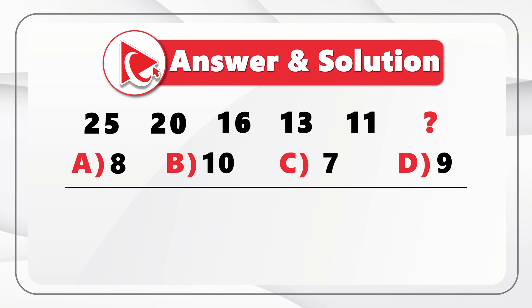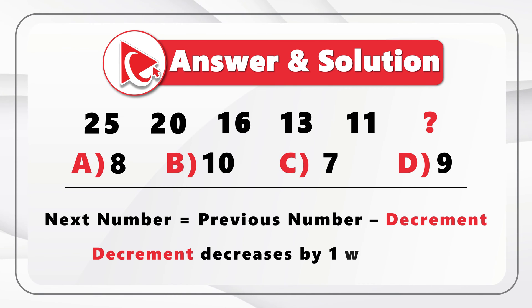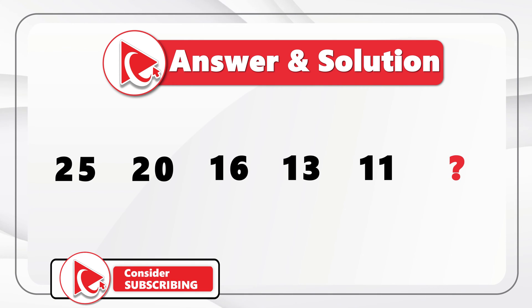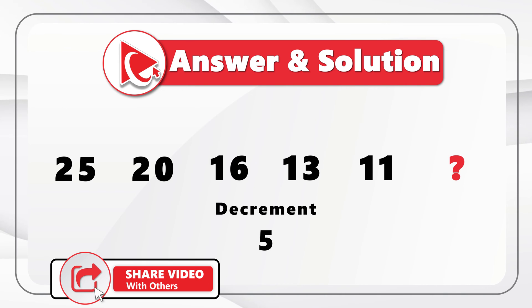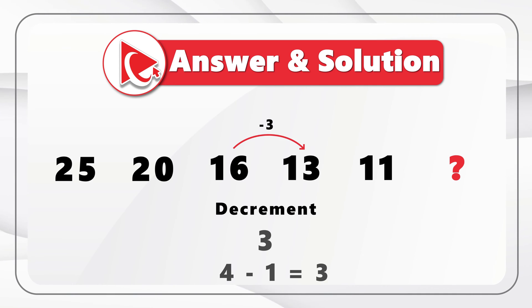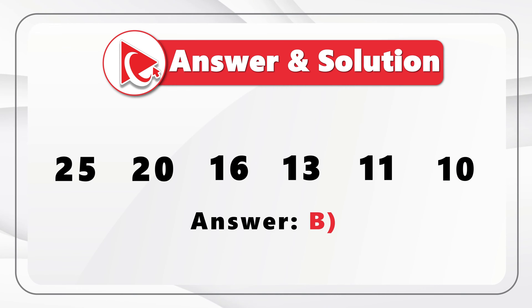Here we have a concept of decrement, and the pattern is that the next number is calculated as the previous number minus a decrement, and the decrement increases by one with each number in the sequence. Our first number is 25 and the initial decrement is minus 5: 25 minus 5 equals 20. Then the decrement becomes minus 4: 20 minus 4 equals 16. Then 16 minus 3 equals 13, 13 minus 2 equals 11, and 11 minus 1 equals 10. So the correct answer here is choice B, 10.